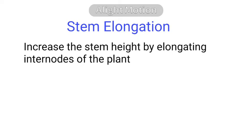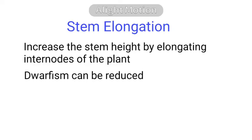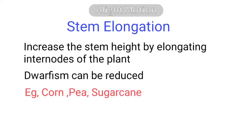One of the important effects of gibberellin is stem elongation, as we have already seen in the history of gibberellin discovery. With the help of gibberellin, we can improve the stem height by elongating the inter-nodes of the plant. The place between two nodes is called inter-nodes. Dwarfness of the plant can be removed by applying gibberellin externally — for example, in corn plants and sugarcane.